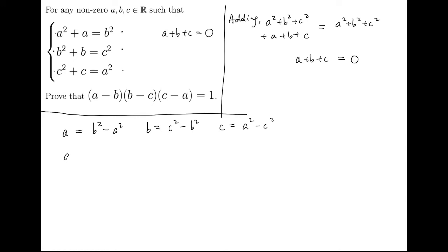Now, multiplying, we will have abc equals (b squared minus a squared) times (c squared minus b squared) times (a squared minus c squared).